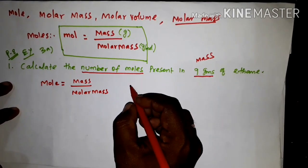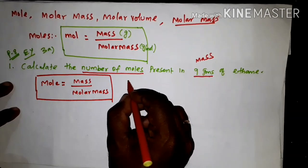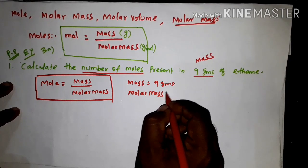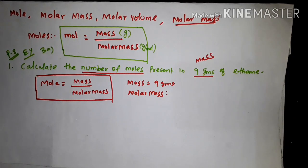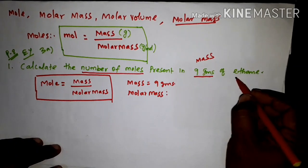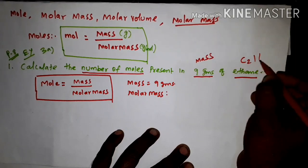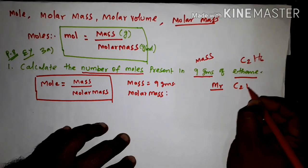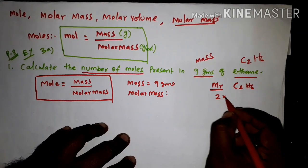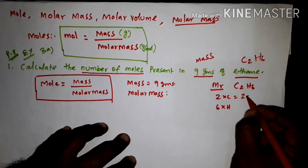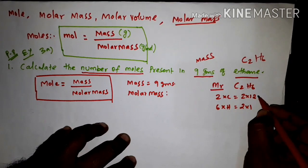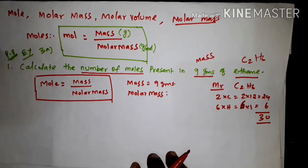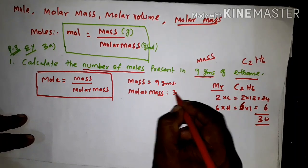The mass is given as 9 grams. Now we calculate the molar mass of ethane. The formula of ethane is C2H6 — two carbon atoms and six hydrogen atoms. Molar mass equals 2 into 12 plus 6 into 1, that is 24 plus 6, which gives a total of 30 gram per mole.